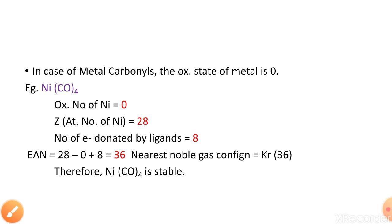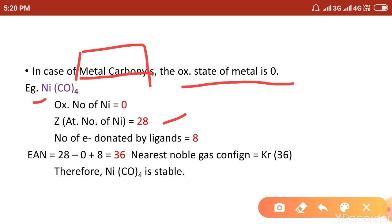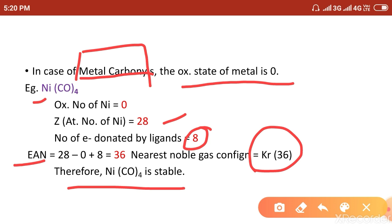In case of metal carbonyls, for example Ni(CO)₄, the central metal atom is Ni with oxidation number always 0. The atomic number of Ni is 28. Four CO ligands donate a total of 8 electrons. So EAN = 28 − 0 + 8 = 36. This equals krypton's atomic number, so Ni(CO)₄ is a stable complex.